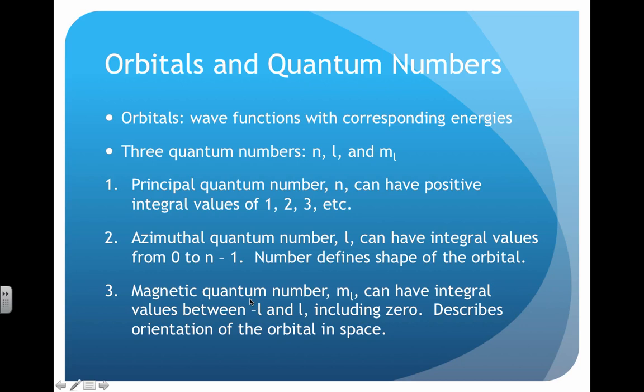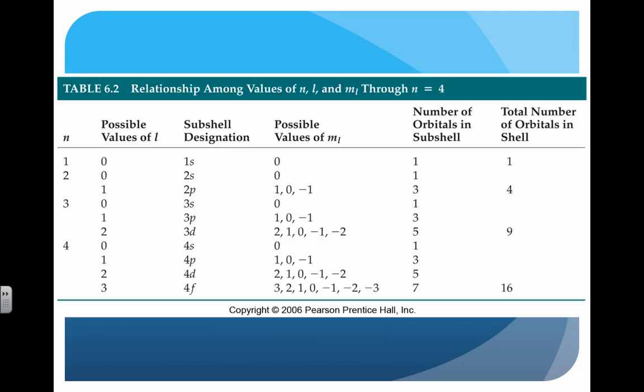There's also a fourth quantum number that isn't discussed in much detail, and this is m sub s, and this is the magnetic spin quantum number. And usually it's either negative 1 half or positive 1 half, which describes the path of the electron within the orbital. And we'll talk more about these in a moment, too.